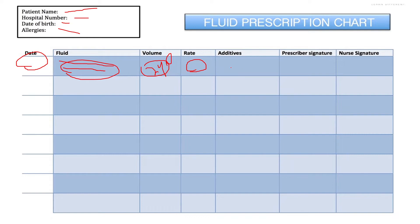For additives, we will be adding vancomycin to the solution, so you write vancomycin 1200 mg or 1500 mg — whichever you are going with, both are fine. Then the prescriber's signature goes here. So all three things: the dose of vancomycin, how much fluid you'll be using, and over what time period — which is the rate — are written here. That is how you fill in the vancomycin fluid prescription chart.